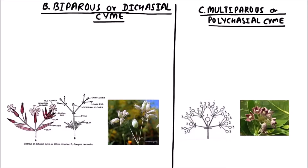Welcome to Studio Biology. In the previous video we discussed the uniparous or monochasial cyme, which is a type of cymose inflorescence. Now in this video we'll discuss some other types of cymose inflorescence like biparous cyme, multiparous cyme, and the cymose head.